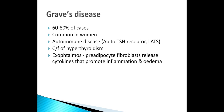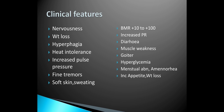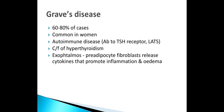Exophthalmos is the protrusion of the eyeball caused due to inflammation and edema of the retroorbital tissue. Treatment includes antithyroid drugs and surgical removal of the thyroid gland. Radioactive iodine therapy is used for destruction of the gland. Graves' disease is 60 to 80% more common in women. It is autoimmune — there are antibodies to TSH receptors. These have clinical features of hyperthyroidism, with pre-adipocyte fibroblasts releasing cytokines that promote inflammation and edema, resulting in protrusion of the eyeball — exophthalmos.